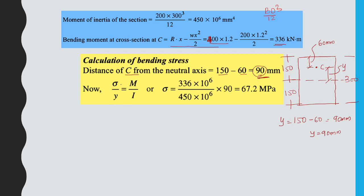Using the bending formula σ/y = M/I, we get σ = M·y/I = (336 × 10⁶ × 90) / (450 × 10⁶) = 67.2 N/mm². Note that 1 MPa = 1 N/mm², so the bending stress at point C is 67.2 MPa.